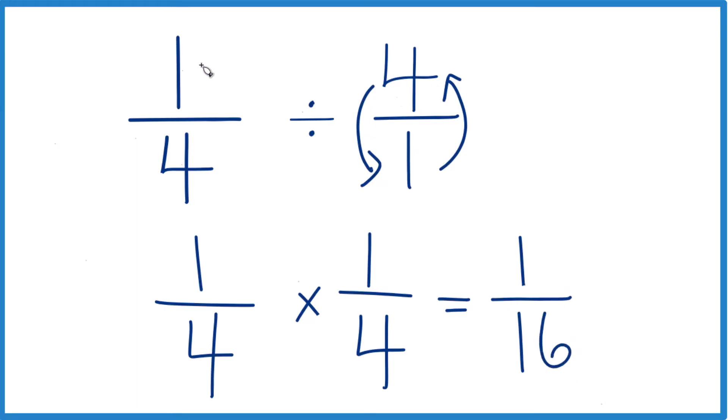So in answer to our question, one fourth divided by 4, or one fourth times one fourth, they both equal one sixteenth. And that's a pretty small fraction, which is what we thought it would be.